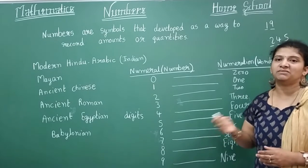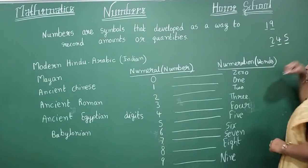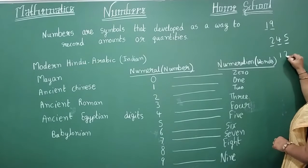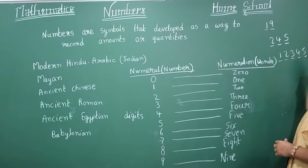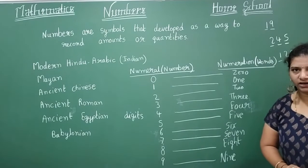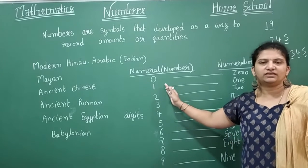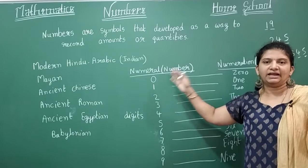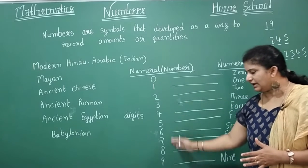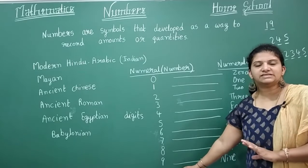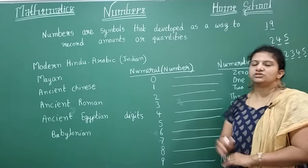Similarly, if you go on increasing your digits, for example a five-digit number — numbers have no ending. They start with this symbol and go to infinite. These are the 10 symbols we use in our mathematics.